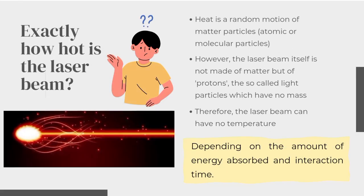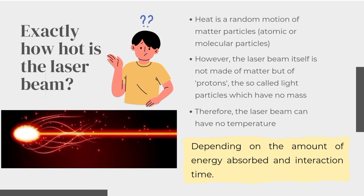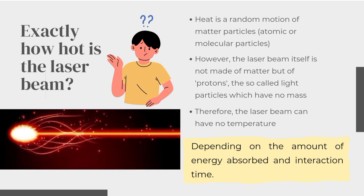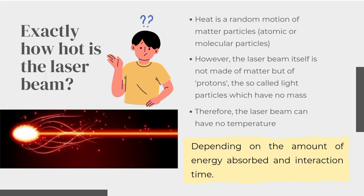Exactly how hot is the laser beam? Heat is a random motion of matter particles — atomic or molecular particles. However, the laser beam itself is not made of matter but of photons, the so-called light particles which have no mass. Therefore, the laser beam can have no temperature. The effect depends on the amount of energy absorbed and interaction time.